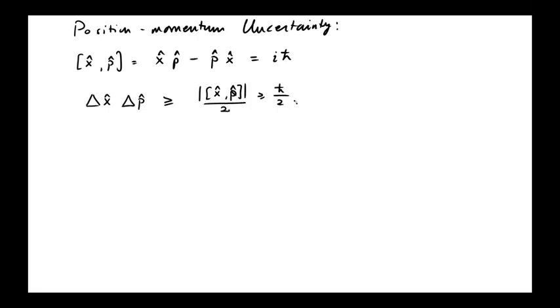Yeah, so this, this ends up being, you know, this is a, this is a, actually, this is a more general theorem. The theorem actually says this is true for any two operators, that delta A times delta B is at least the commutator between A and B divided by 2. And so, so if you use x-hat and p-hat for A and B, you get this result.